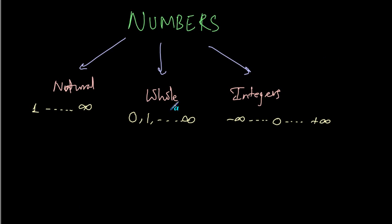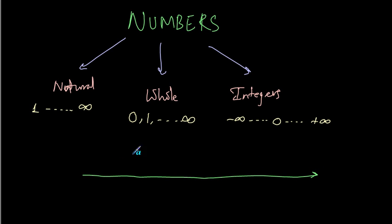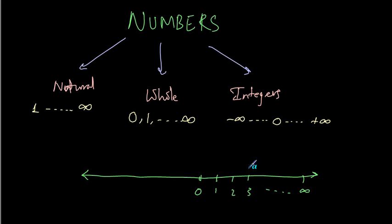Now, I am plotting a number scale and let's see where these numbers fall on that number scale. I have this number scale — in the center of that number scale is 0. On the right hand side, I have positive numbers 1, 2, 3 and so on till infinity.